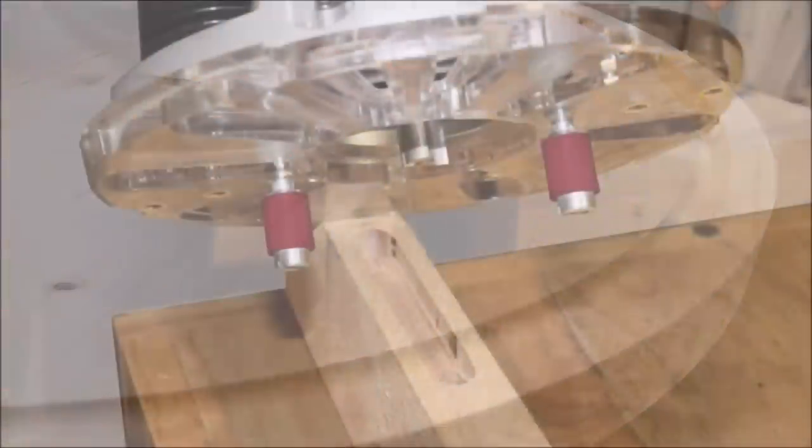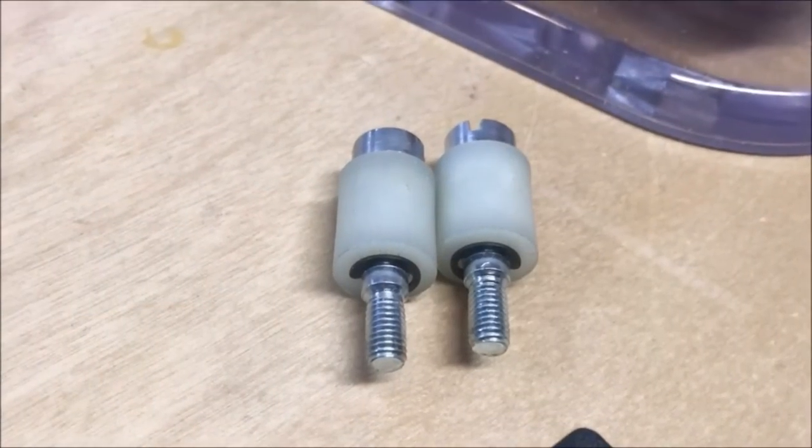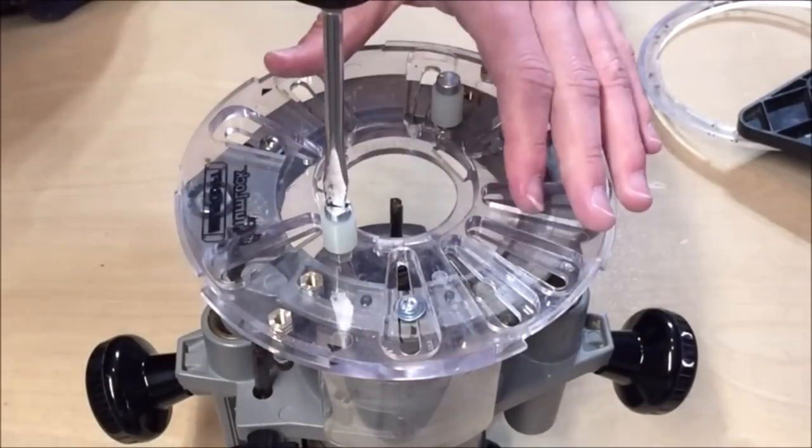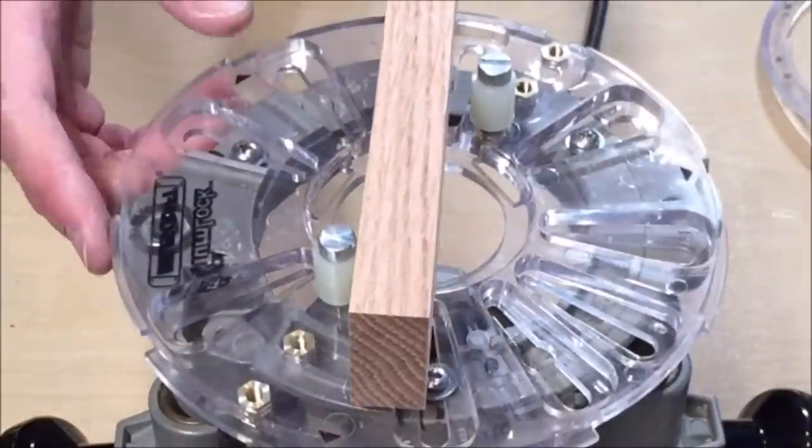You can now cut mortises by installing the provided mortise pins into the turnlock base. Depending on the thickness of your workpiece, there are multiple locations where you can install the pins into the base. Be sure that the pins are evenly spaced from the bit.